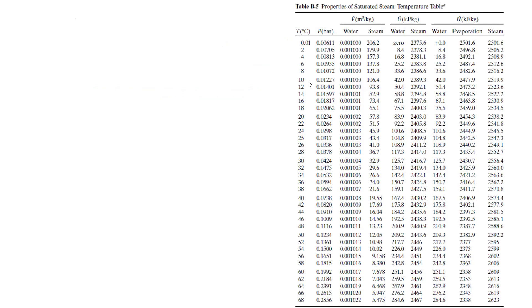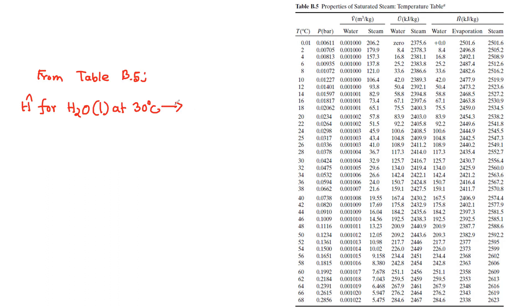From Table B5 — enthalpy for water liquid at 30 degrees Celsius.